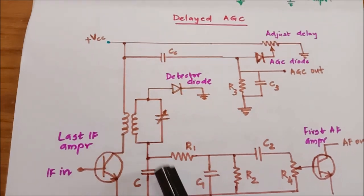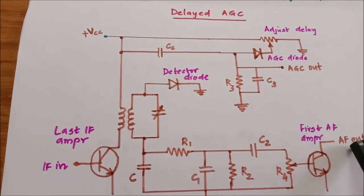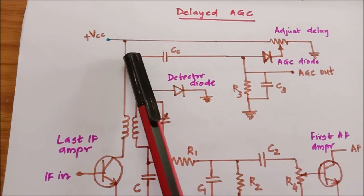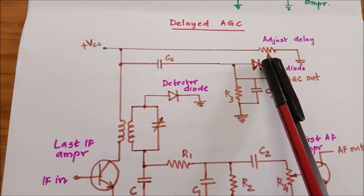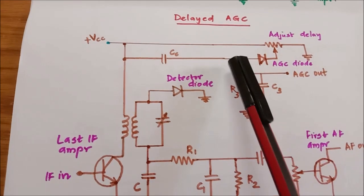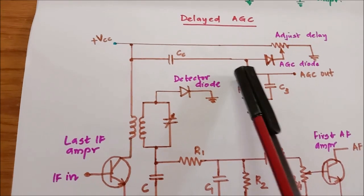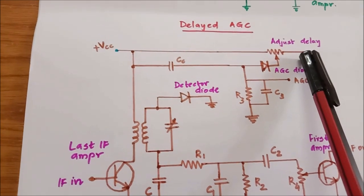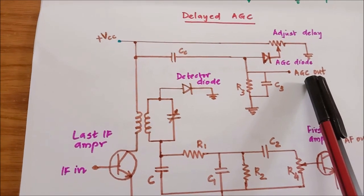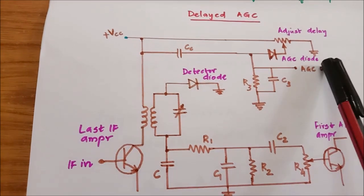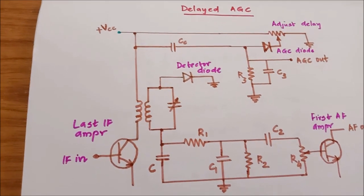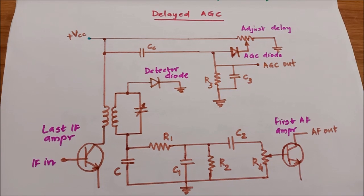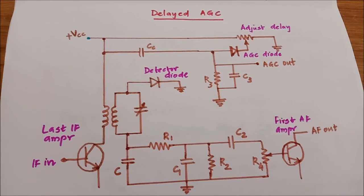The detector section provides the demodulated audio frequency output across R4, which is then amplified to give the audio output. Depending on the strength of the received signal, the AGC diode decides whether the AGC circuit should be active or not. Up to a particular voltage level set by the manual adjustment control, the AGC bias will not be applied. Beyond that set voltage, a DC voltage corresponding to signal strength is generated and applied as DC bias to the IF and RF amplifiers to control their gain. In this way, the AGC circuit ensures that irrespective of the channel tuned to, the receiver output remains almost constant.